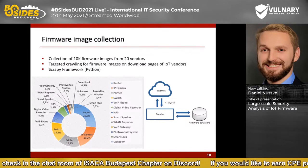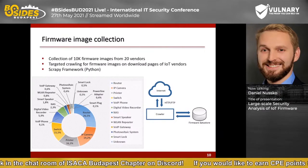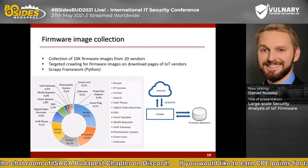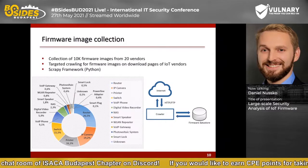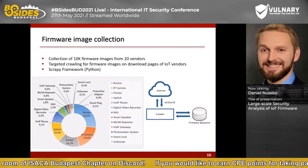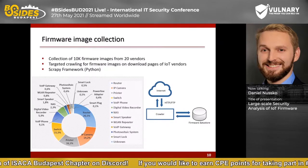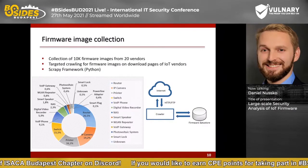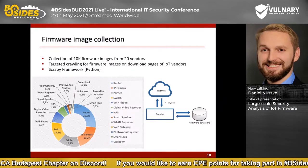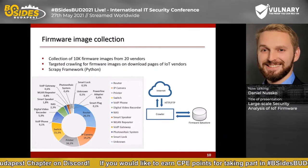To automate downloading, I developed a crawler in Python based on the Scrapy framework. I crawled the download pages of 20 vendors and downloaded about 10,000 firmware files. I manually identified each vendor's download portal, then the crawler collected firmware files automatically. Together with the firmware files, I also stored metadata including a hash value of each file to avoid duplicates and the URL it was downloaded from.